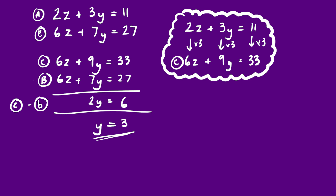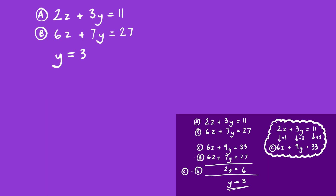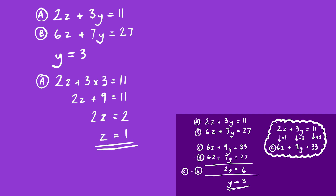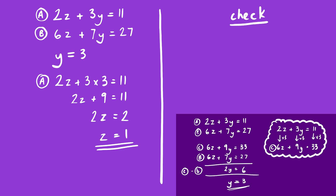Stage two: substitute y = 3 back into equation A. So 2z + 3 × 3 = 11, giving 2z + 9 = 11, so 2z = 2 and z = 1. The final stage is to check by substituting back into equation B: 6 × 1 + 7 × 3 = 6 + 21 = 27. Correct.